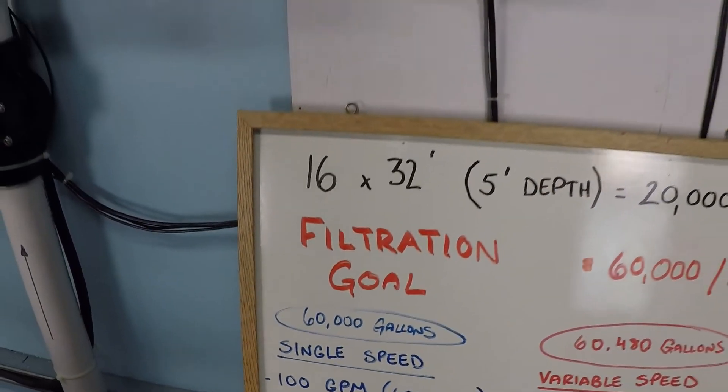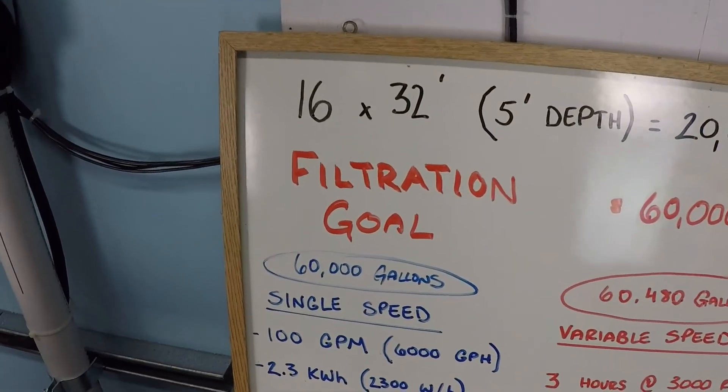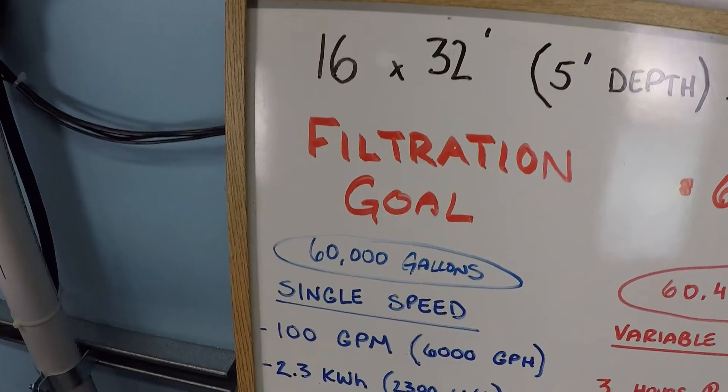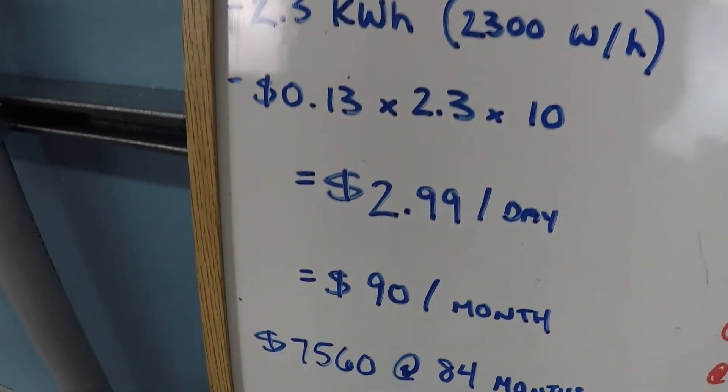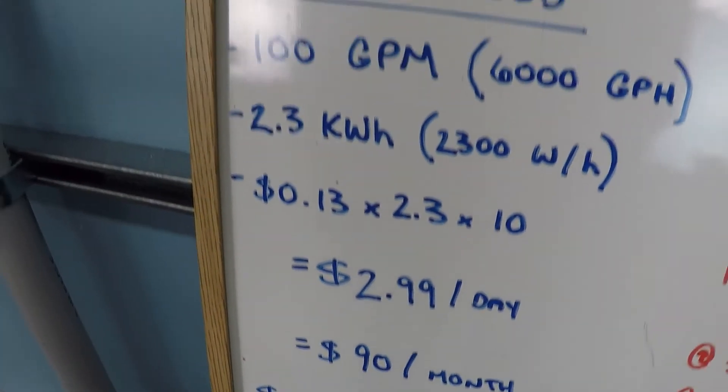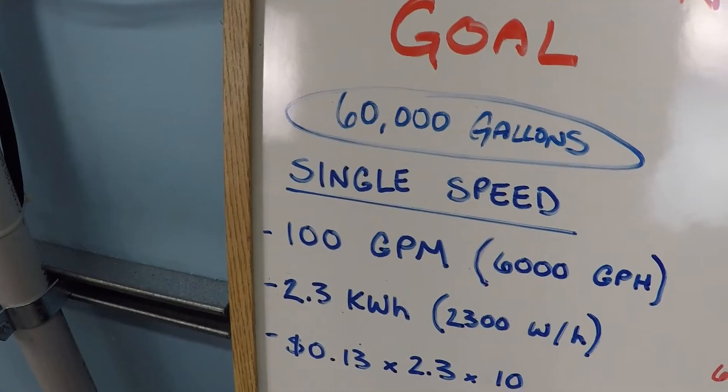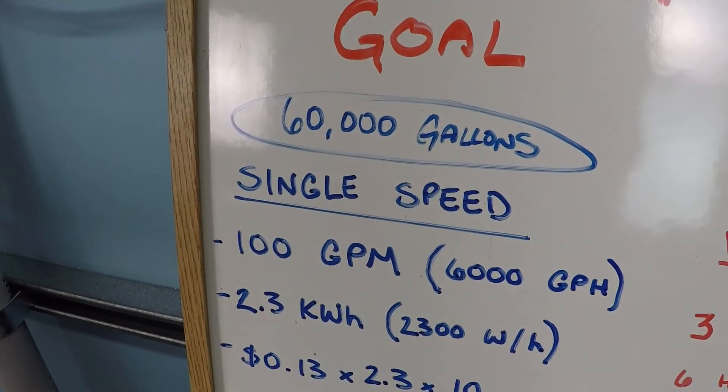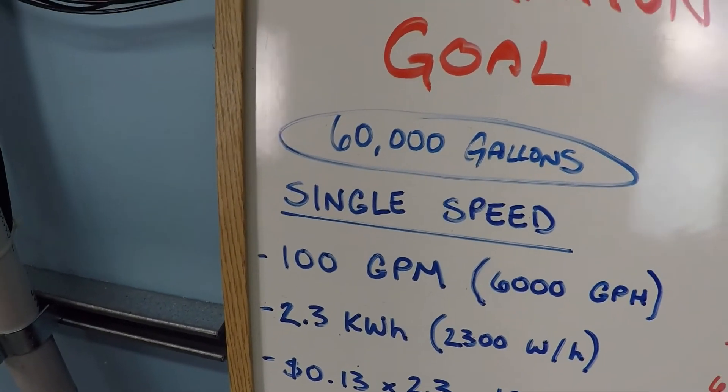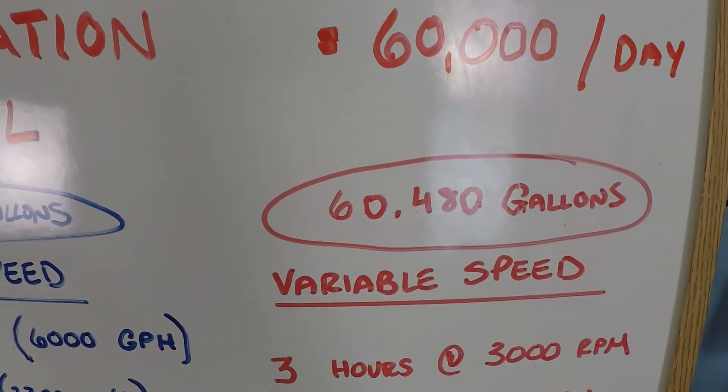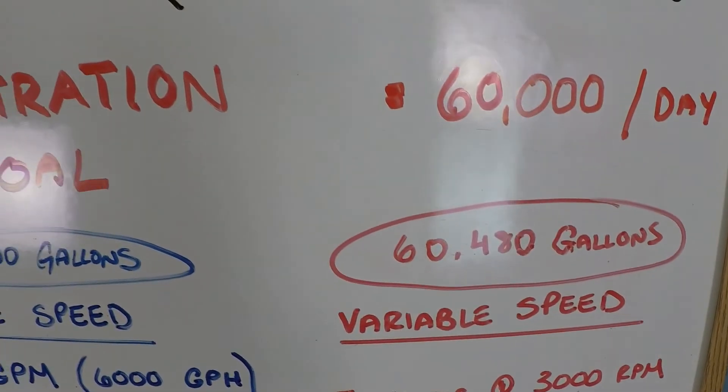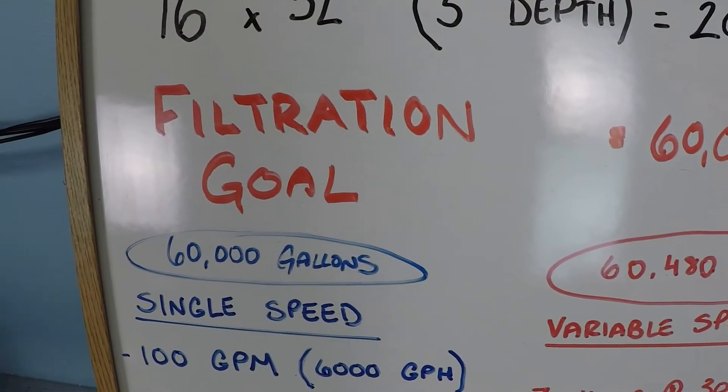So that is how the average person with a single speed pump saves money. If you were to run this pump 24 hours a day, well that would be an awful lot of money to do that. And you know what? It's more filtration than you need. So it's a good idea to turn off your pump part of the day. However, that cannot compare to the cost savings of a variable speed pump. And that's what I'm going to show you here.